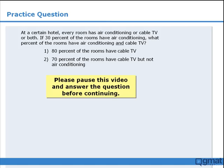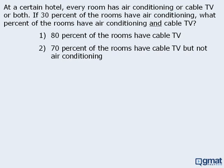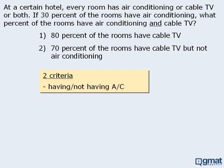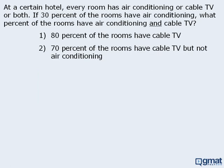Please pause this video and answer the question before continuing. In this question we want to determine what percent of the hotel rooms have air conditioning and cable TV. Notice that we have a population of rooms here and there are two criteria associated with each room: having or not having air conditioning, and having or not having cable TV. As such, we can solve this question using the double matrix method.